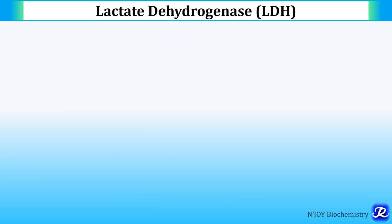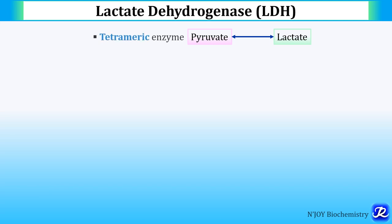Now let's see the isoenzymes of lactate dehydrogenase. This enzyme LDH catalyzes the conversion of pyruvate to lactate or lactate to pyruvate — the reaction is reversible. This reaction also requires NAD, so there is interconversion of NAD to NADH. This is a tetrameric enzyme.